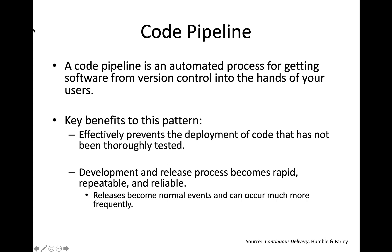Companies that are only deploying changes to production once a quarter or a couple of times a year are often not following an automated code pipeline process. Their delivery process is very manual and cumbersome, and it can be unreliable — which is one of the reasons their releases carry great risk, in addition to releasing so many changes at once. If we are able to automate the process of delivering code to customers, we can work in much smaller batch sizes, release much smaller sets of changes, and therefore release more frequently.